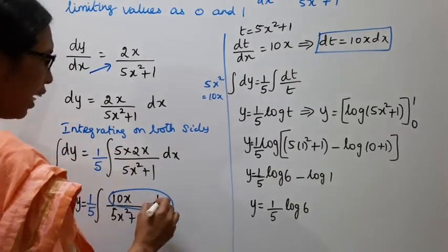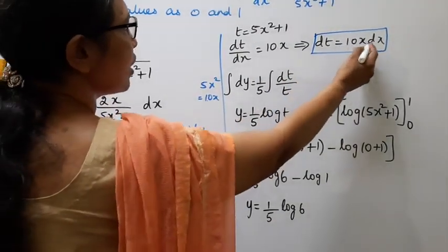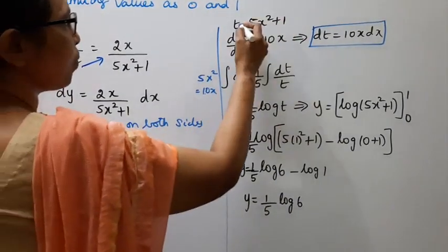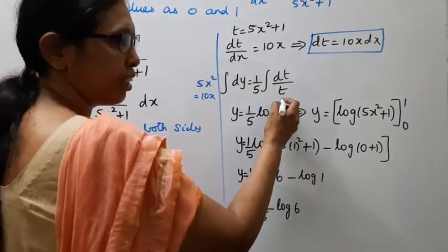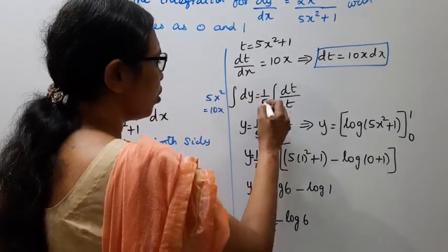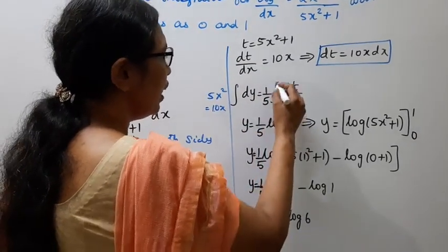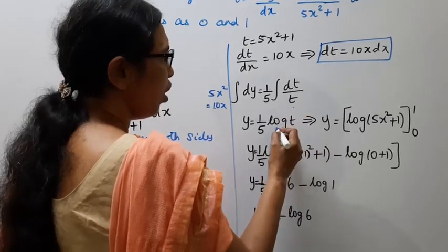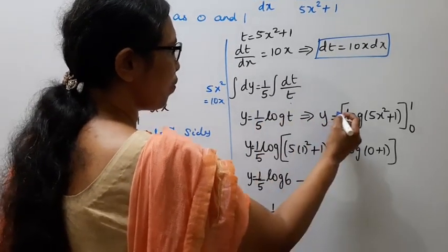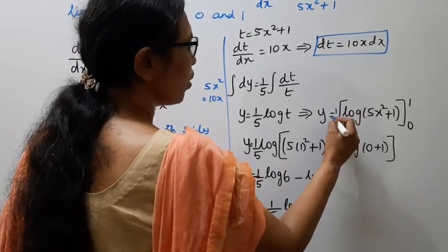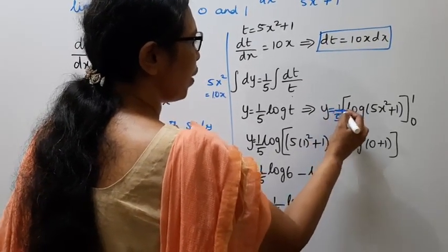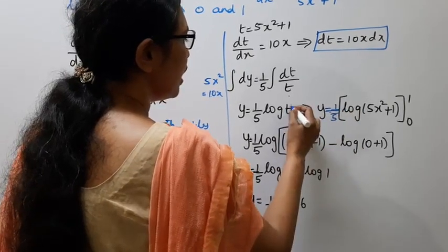The integral becomes: integration of dy equals 1 by 5 times integration of 10x dx divided by t, where t equals 5x squared plus 1. Integrating, y equals 1 by 5 times integration of dt by t, which gives y equal to 1 by 5 log t.